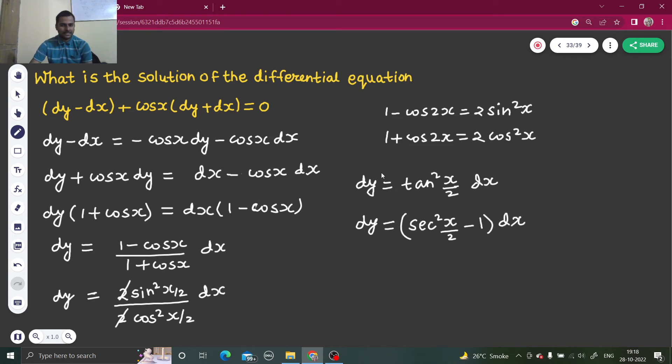Now we are in a situation to integrate both sides. Integration of dy is y. That of secant square x by 2 is tan x by 2 divided by coefficient of x which is half - dividing by half is same as multiplying by 2. Integration of 1 is x plus a constant.